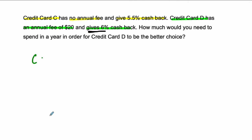So for credit card C, there's no annual fee. Let's write an equation for C, let's model this. You get 0.055, 5.5% cash back on everything you spend. Whereas D, the profit, these are profit equations, you're getting 0.06, 6% times what you spend, but you lose $20.